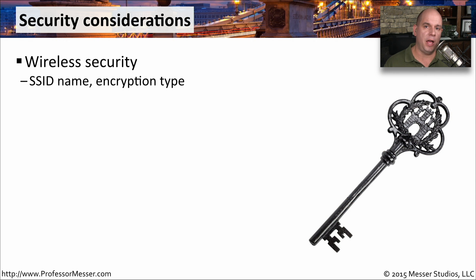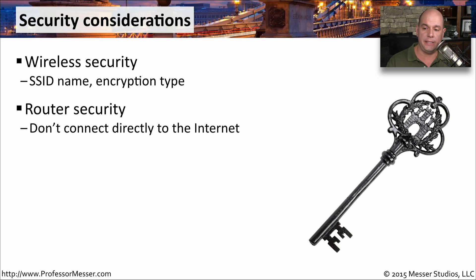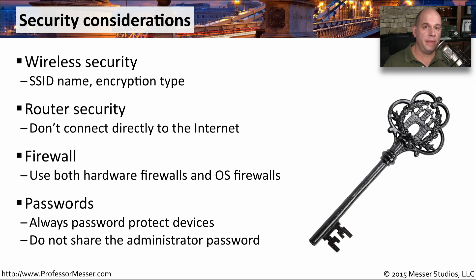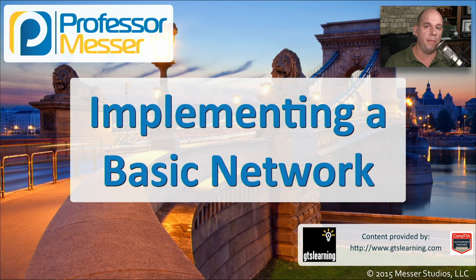Security is important regardless of how big the location is. For a wireless network, we need to look at the SSID information and encryption type and make sure all data is protected. Your router needs proper security, passwords need to be in place, and we should always have a router and firewall separating us from the internet. We need to use both the physical firewall at our internet connection and the firewalls built into our operating systems. Everything must be password protected — we don't want to use default passwords on routers and switches; everything should be changed and those passwords kept private.